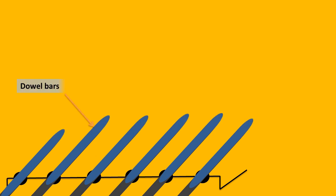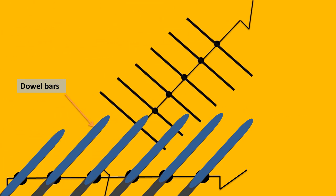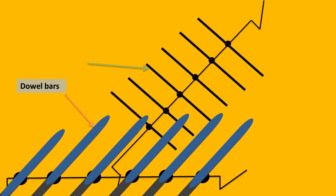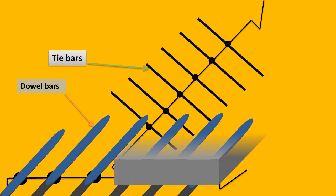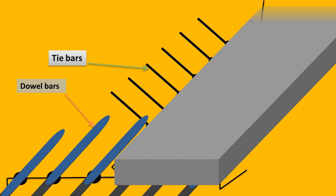The dowel bar is placed at a transverse joint and it is parallel to the center line of the pavement and parallel to the direction of traffic. The tie bar is also provided but it is placed at the longitudinal joint, and it is perpendicular to the center line of the road or perpendicular to the direction of traffic. Now we pour the concrete of the entire section of this pavement.